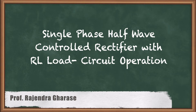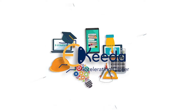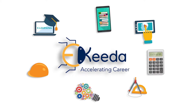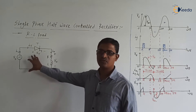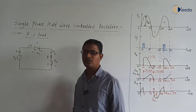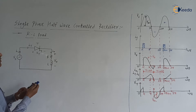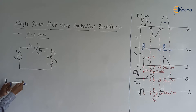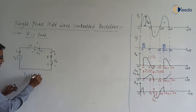Hello friends, in this video we are going to discuss single phase half wave controlled rectifier with RL load. Here is the circuit diagram for RL load, where the supply voltage Vs is given by Vs = Vm × sin(ωt). From ωt = 0 to π, Vs is positive.